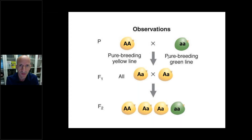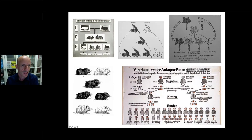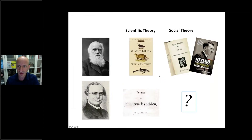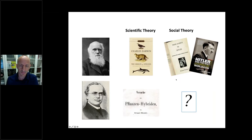Mendel published his paper in the 1860s, but not enough people found it interesting. At the beginning of the 20th century there was a rediscovery of Mendel's laws, and the same rules seemed to apply to many other organisms — flowers, rabbits, guinea pigs — and also to the human domain. This is the beginning of modern genetics, but it seems like a technical theory, not a social one. This is at least the image we usually get.